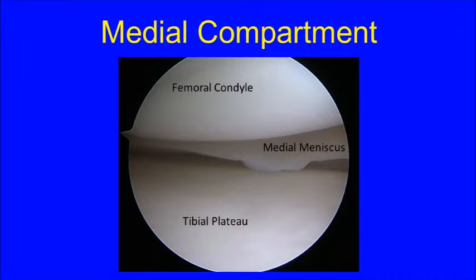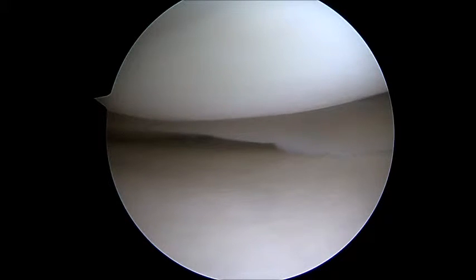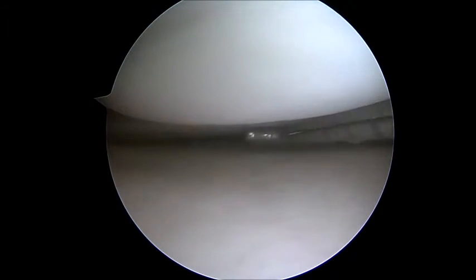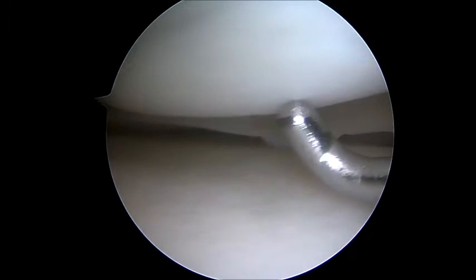The microfracture procedure begins in the medial compartment of the knee. For orientation purposes the femoral condyle or end of the femur is on top of the image. The tibial plateau or top of the tibia is on the bottom portion of the monitor and the medial meniscus is between these two structures. Here you can see the arthroscopic probe showing the medial meniscus, the cartilage of the medial tibial plateau, and the cartilage of the femoral condyle.